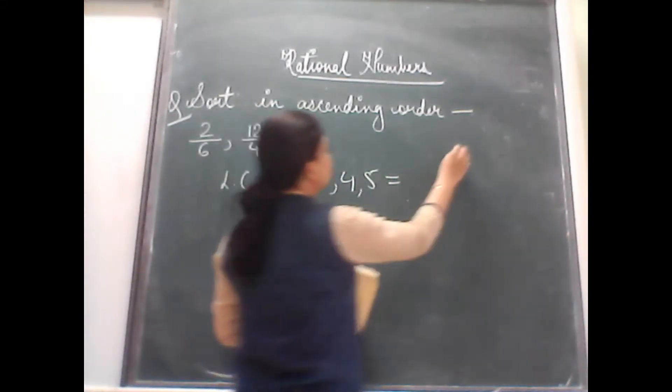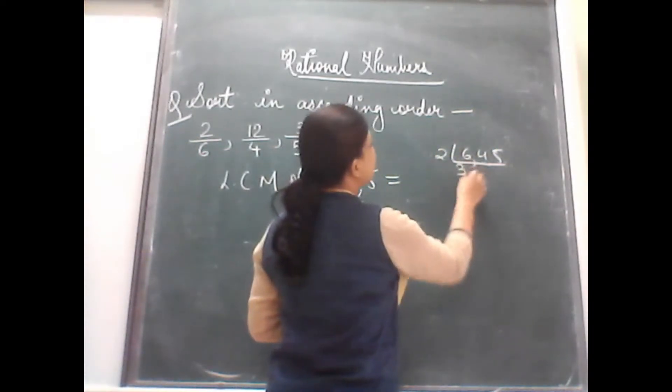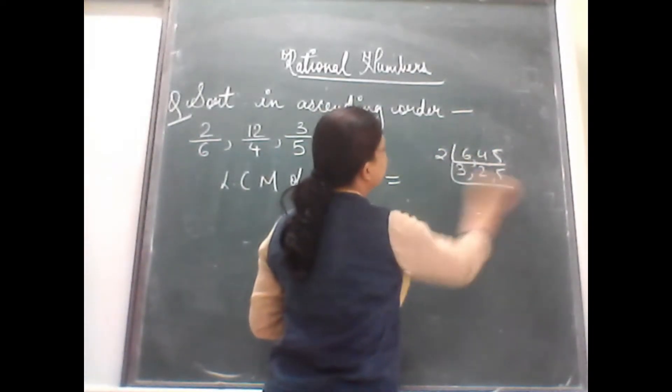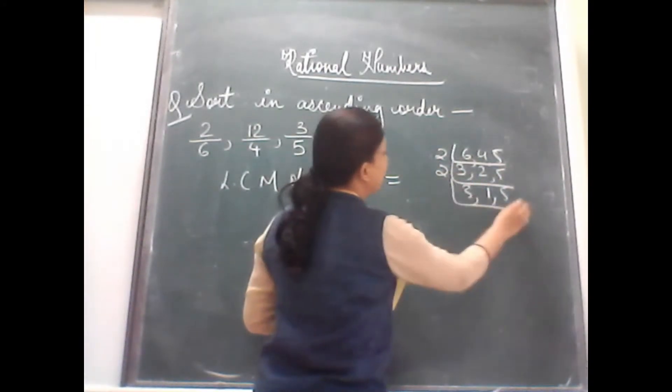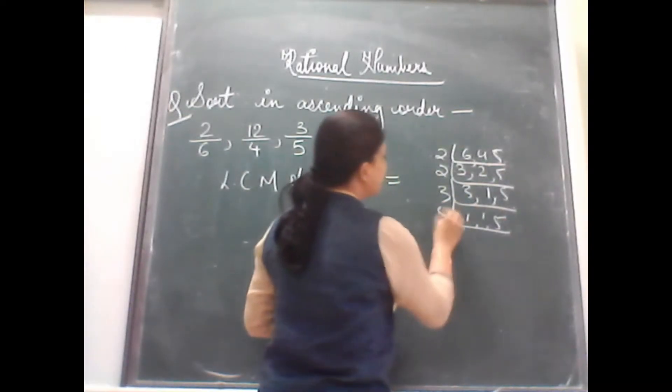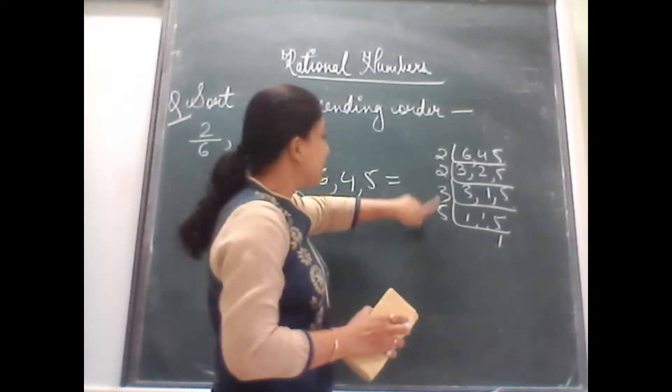Let us take the LCM, 6, 4 and 5. This will go by 2, 3, 2, 2 and 5, 2, 1 and now you can take 3, 1 and lastly 5, 1 is 5. So what is the LCM? Check. 5, 3 is 15, 15, 2 is 30.